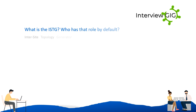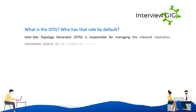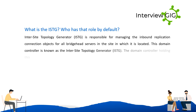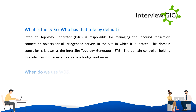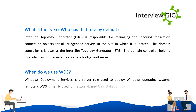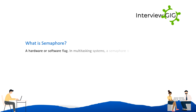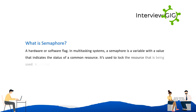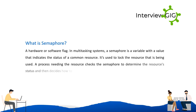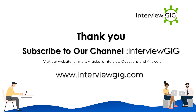What is the ISTG and who holds that role by default? The Inter-Site Topology Generator (ISTG) is responsible for managing inbound replication connection objects for all bridgehead servers in the site in which it is located. This domain controller is known as the inter-site topology generator, and may not necessarily also be a bridgehead server. When do we use WDS? Windows Deployment Services (WDS) is a server role used to deploy Windows operating systems remotely, mainly used for network-based OS installations to set up new computers. What is a semaphore? A semaphore is a hardware or software flag in multi-tasking systems — a variable whose value indicates the status of a common resource, used to lock the resource that is being used.